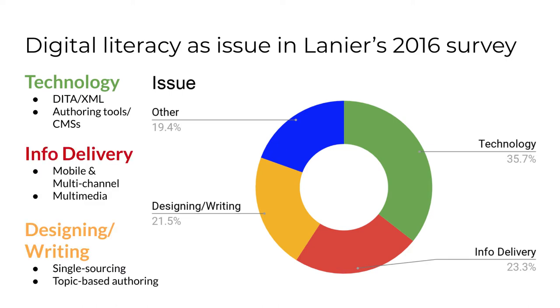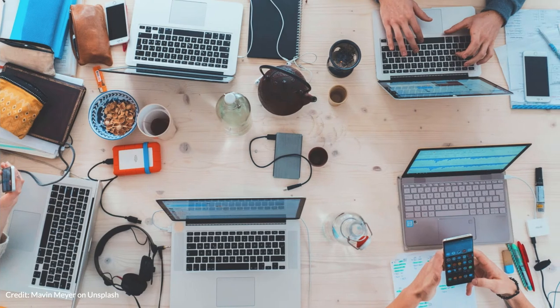In the information delivery category, professionals most mentioned issues with mobile and multi-channel or multimedia publishing. In the designing and writing category, professionals most mentioned agile workflows and techniques like minimalism, but also technologies like single sourcing and topic-based authoring. All of this appeared in Lanier's article, Tables 1 through 4. It's clear that while writing, designing, and project management are critical skills, the studies also make clear that technical skills — digital skills — are also critical. In fact, they appear to be the predominant issues pros say they face at work.